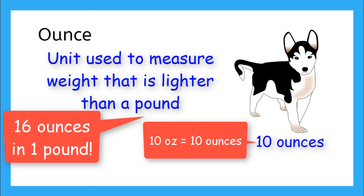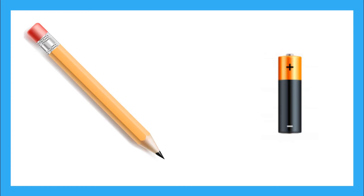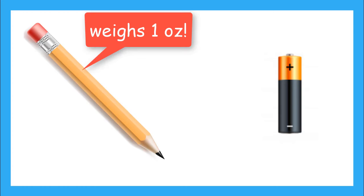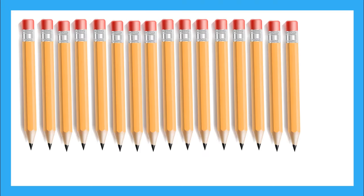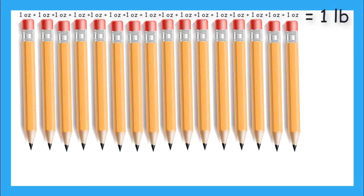So how much is an ounce? Well, a standard length pencil is about one ounce and one AA battery is about one ounce. So if one pencil is equal to one ounce, then 16 pencils would be equal to one pound. Remember, we know this because 16 ounces is equal to one pound.